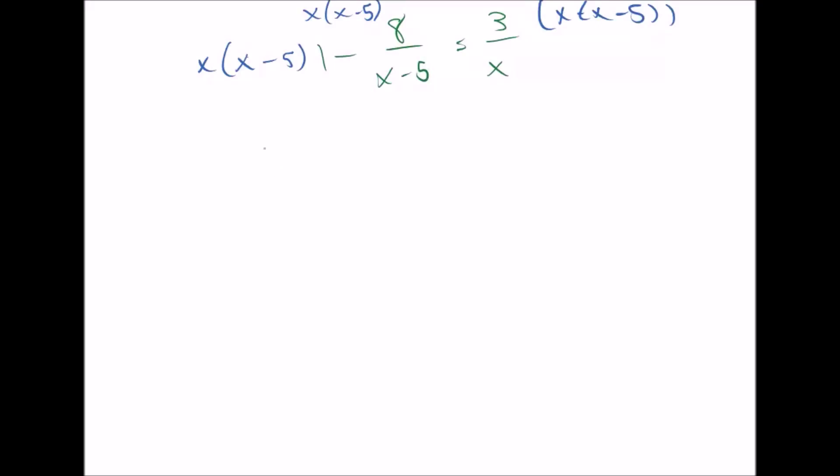1 times x times x minus 5 is just x times x minus 5. This one's more interesting. The x minus 5 and the x minus 5 cancel. So we're left with minus 8x because of this minus sign here. And here the x and the x cancel. And we're left with 3 times x minus 5. Now we're just going to multiply that out.